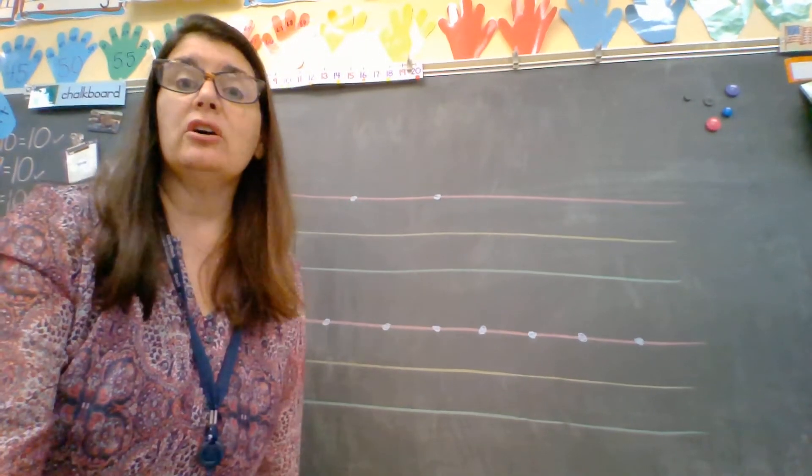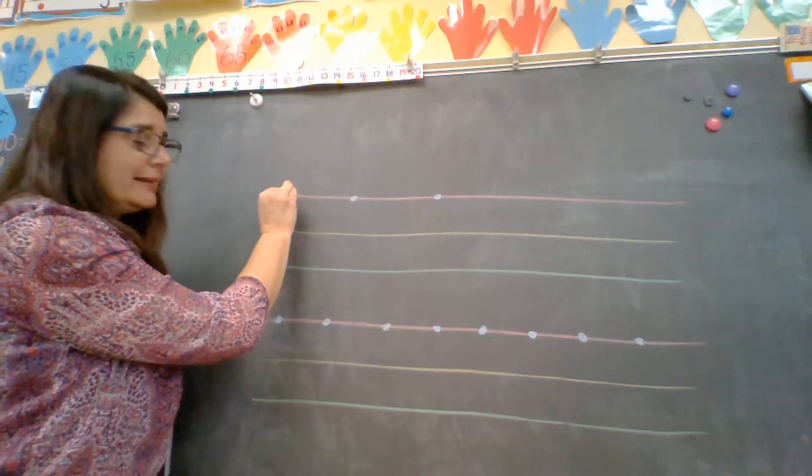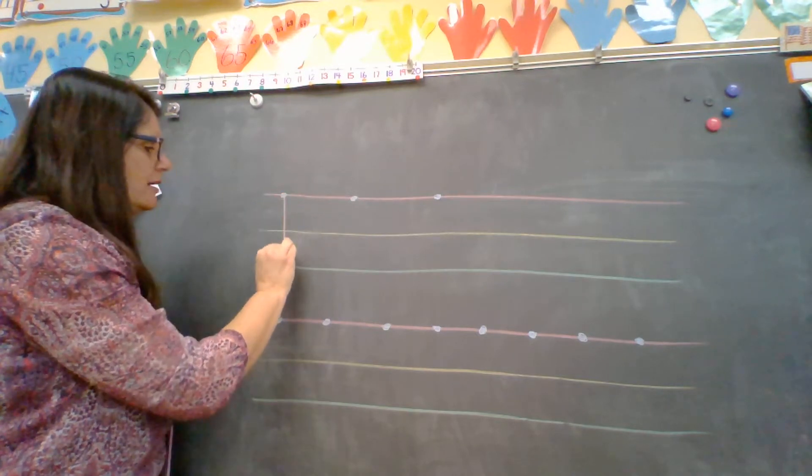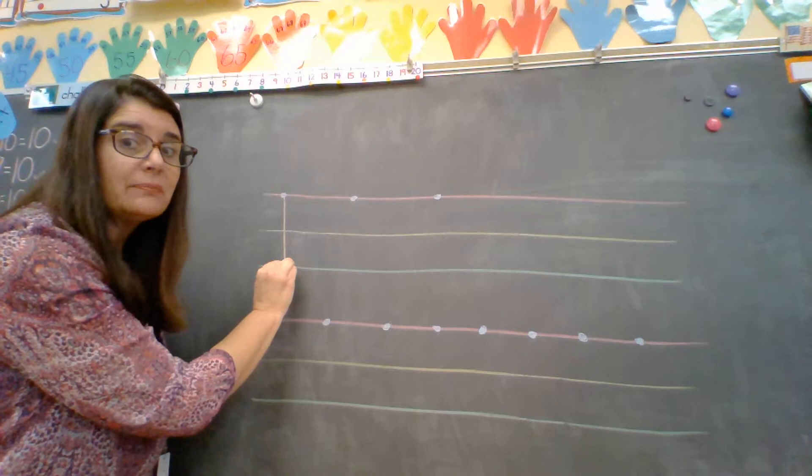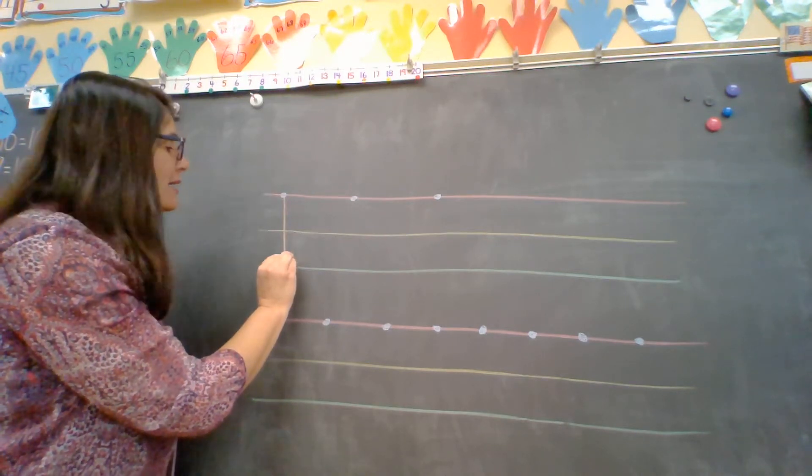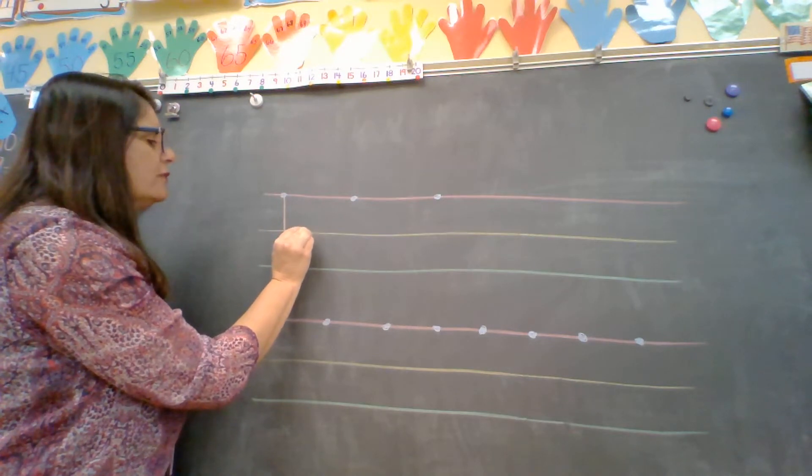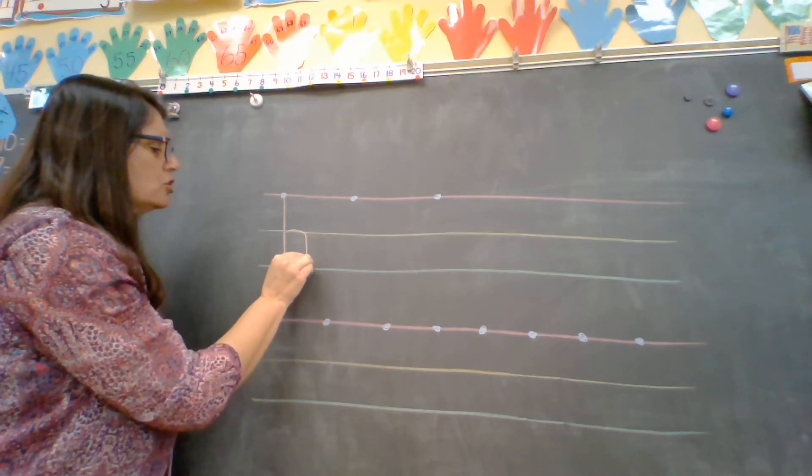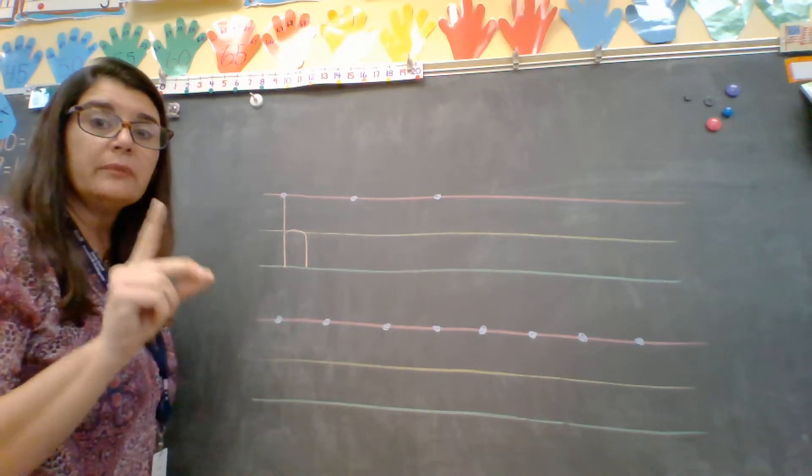Okay lowercase h. You're gonna start on the dot just like capital H. Start on the red line. Go straight down to green. Stop! Don't pick your pencil up. Go straight back up to yellow and right as you get to yellow you're gonna curve over and go straight back down to green. It's all one motion.